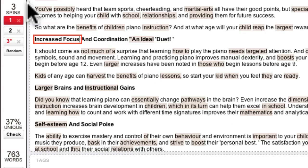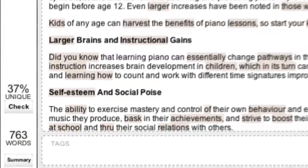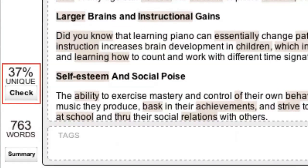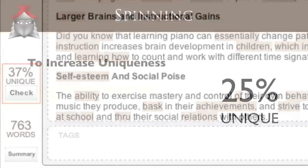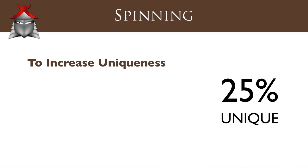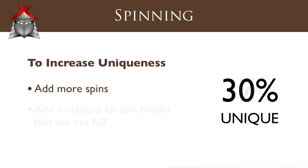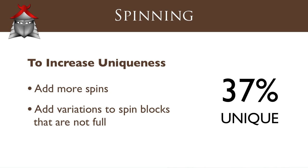This also means that making changes to the unspun text of my article will not change the uniqueness of my article. The only ways to increase the uniqueness of your article are to add new spin blocks or add additional variations into spin blocks that are not currently full.